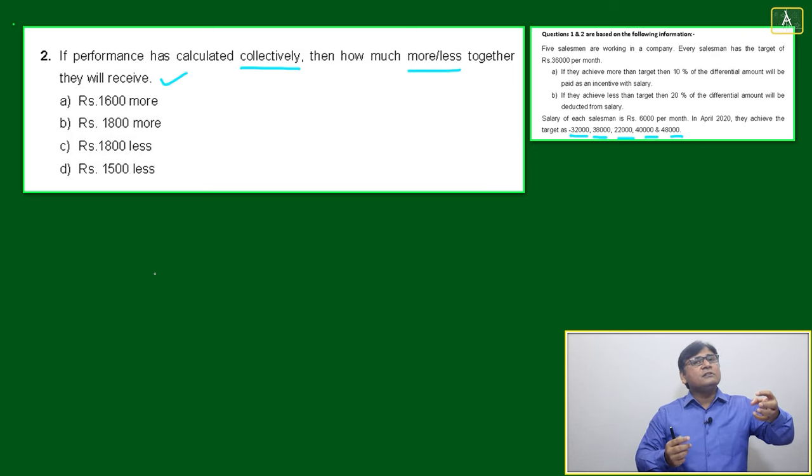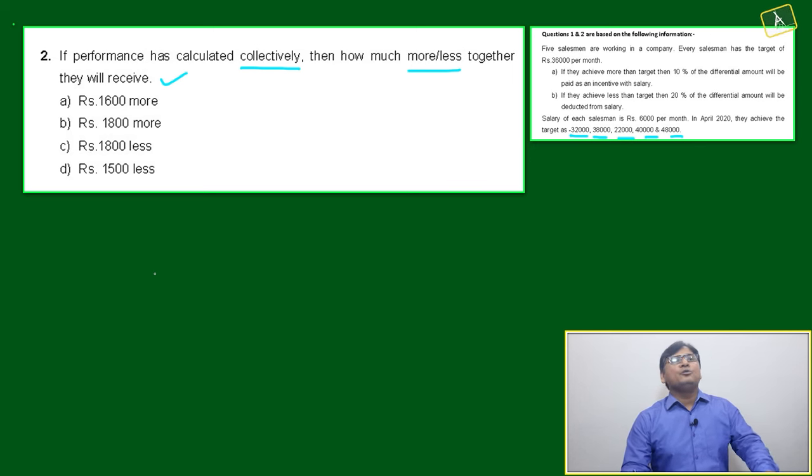If you are working as five persons versus working as one person, what will be the difference in amount? The simple thing is we have to add collectively. If higher than 36,000, add all the numbers, subtract 36,000, and whatever extra is coming,